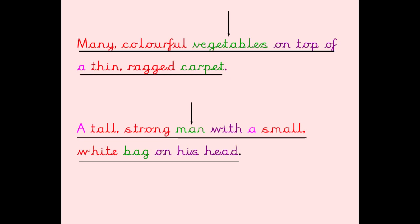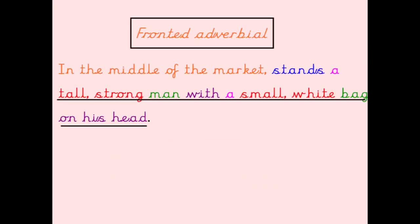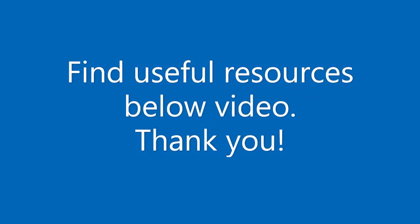If you have done all 10 of your expanded noun phrases and would like an extra challenge, the next thing you could do is write a fronted adverbial for each of your noun phrases. So for example, I've used 'a tall strong man with a small white bag on his head' and I need to think of a fronted adverbial which describes when, where, or how that happens. I've chosen where that happens, so at the beginning of my sentence I've put: 'In the middle of the market, stands a tall strong man with a small white bag on his head.' You can see I've had to add 'stands' so that the sentence makes sense. So if you've finished your expanded noun phrases, you can write some fronted adverbials and you'll be well on your way to writing your paragraph tomorrow.